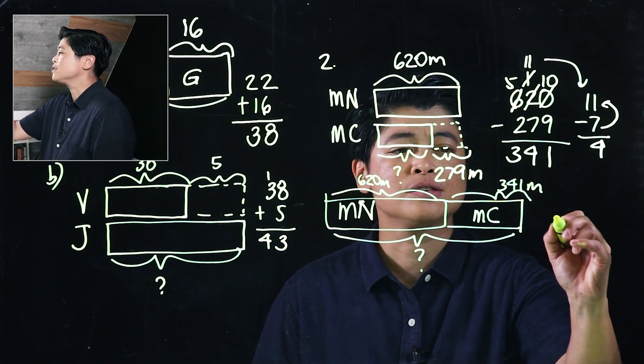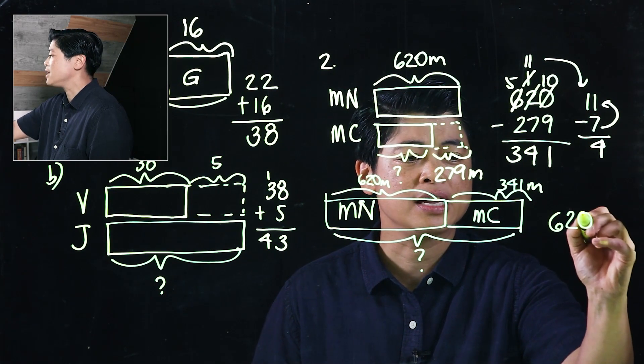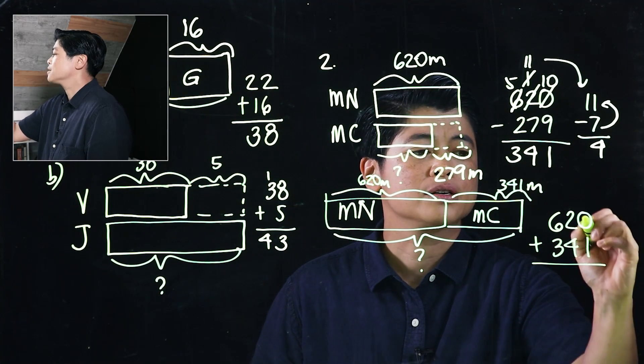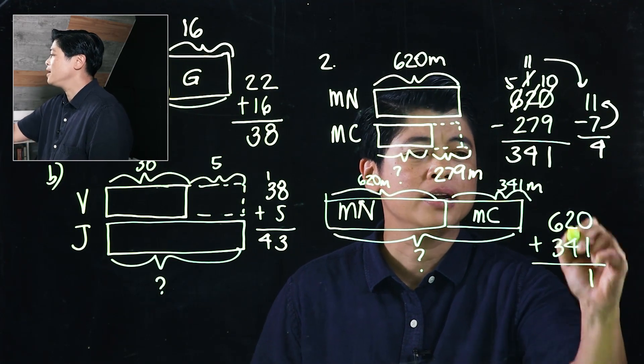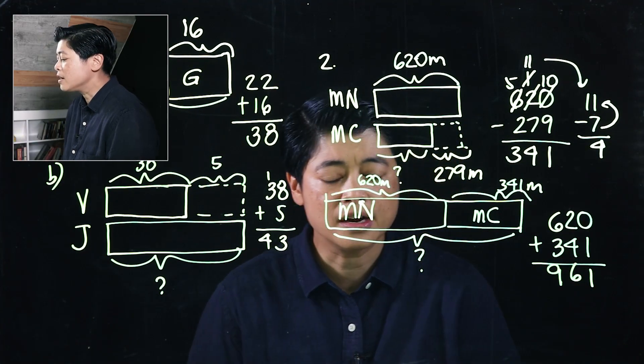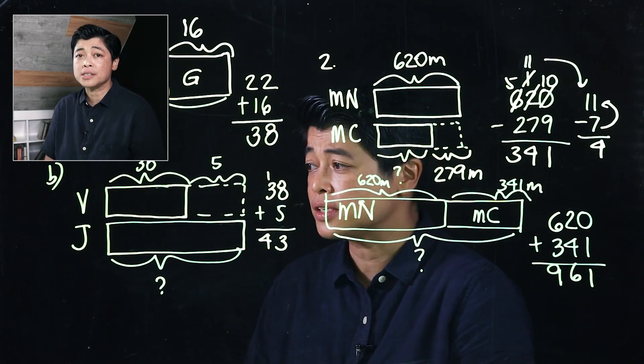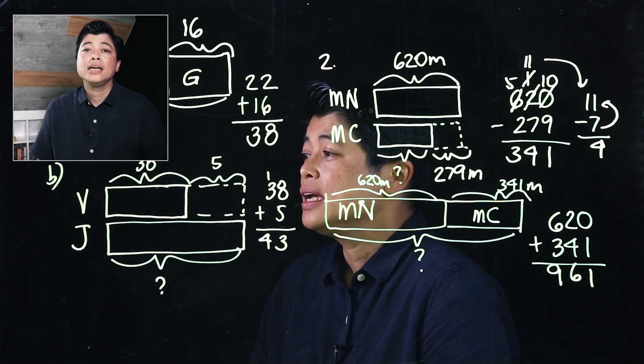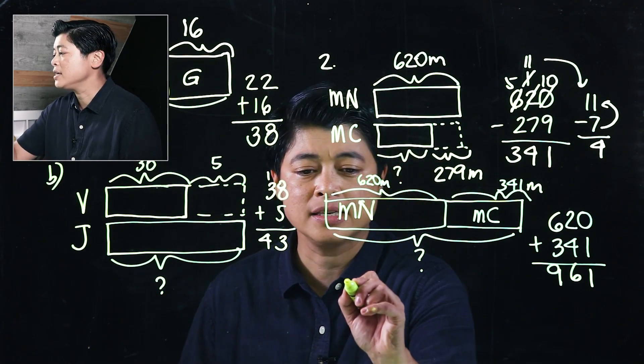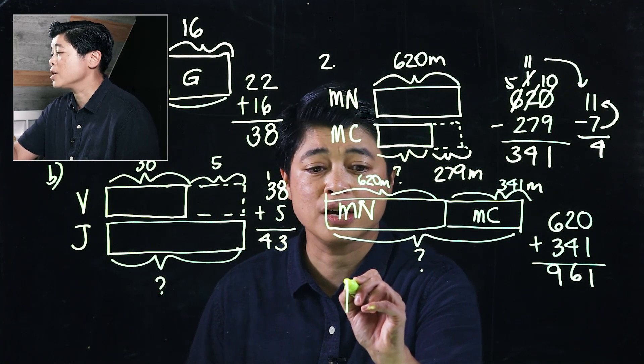So therefore, in this case, this will be 620 plus 341. So that means that will be 1, 2 plus 4 is 6, and this is 961 meters.